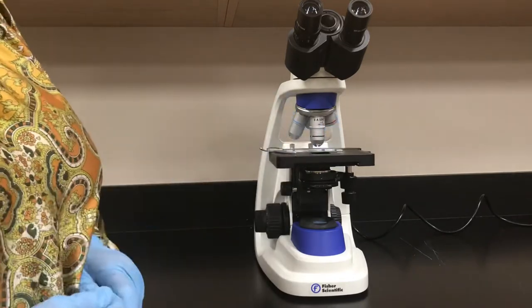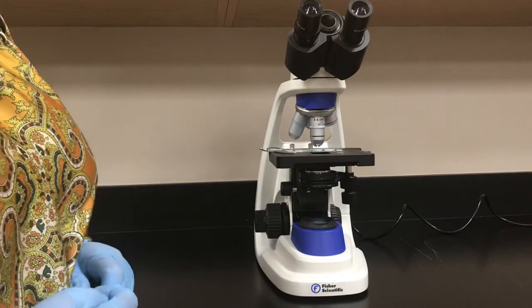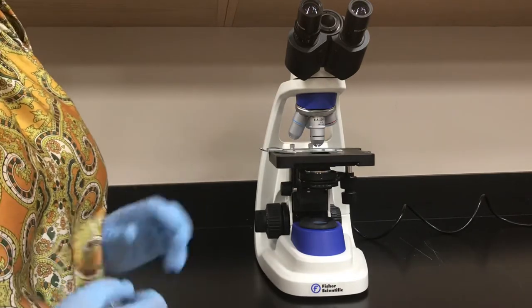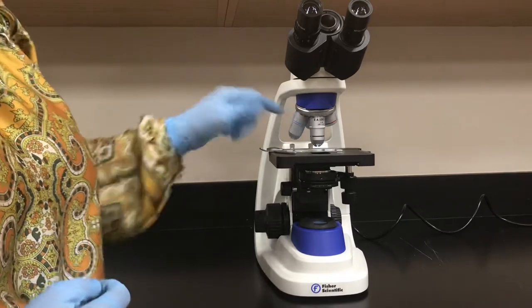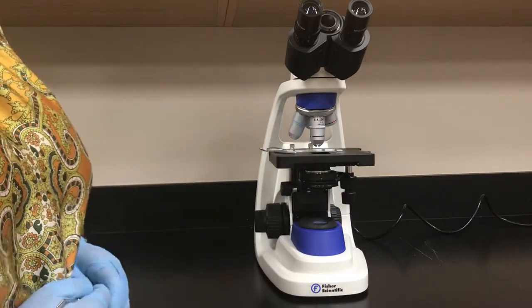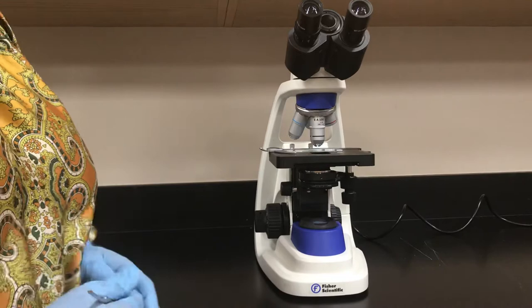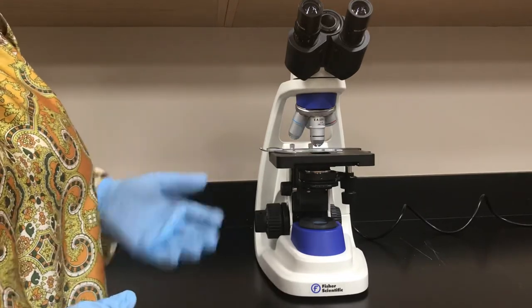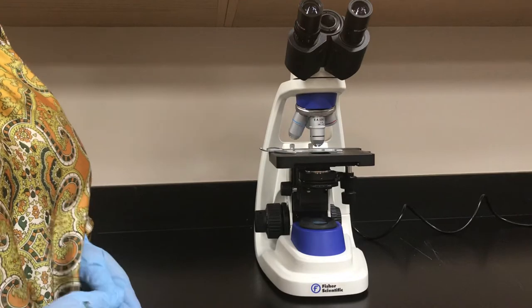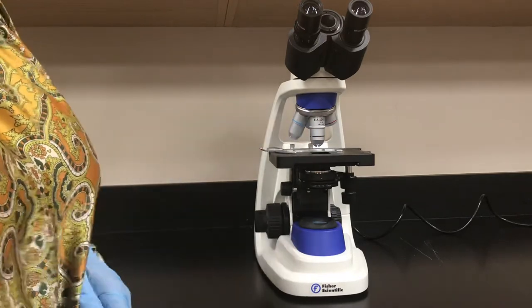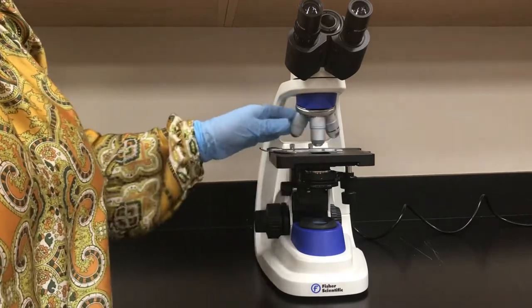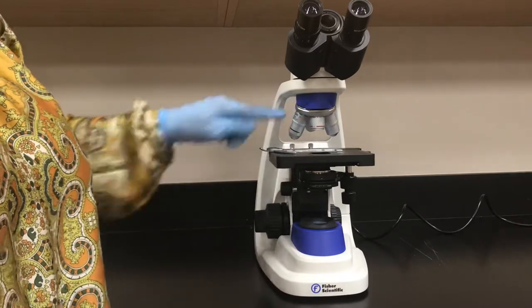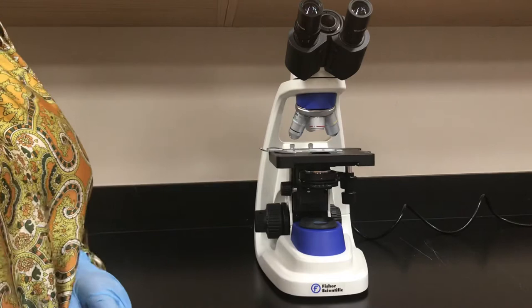The last objective I want to talk about is the oil immersion objective. It magnifies 100 times. It is sometimes blue, sometimes black, sometimes white color coded. You require a specific special oil and embed your lens into that oil to be able to see it. Look at how small the working distance is. That's why we always start and leave our microscope with the red color coded scanning objective.